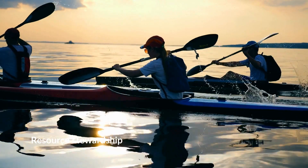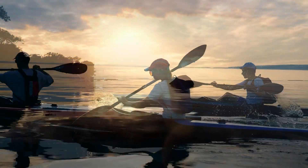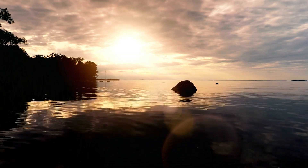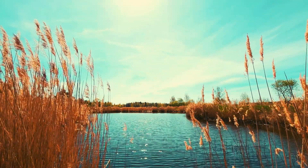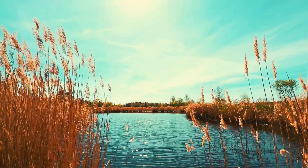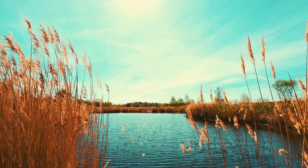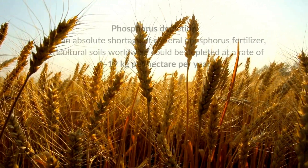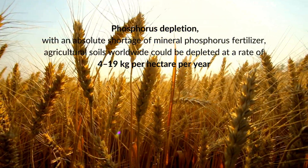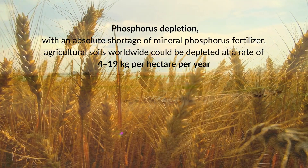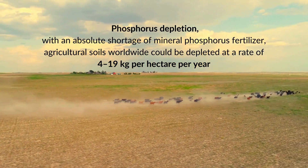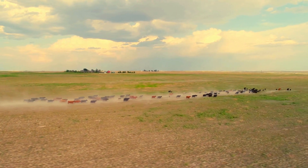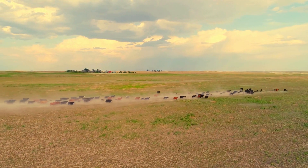In conclusion, achieving an equilibrium between human needs and environmental conservation is imperative in confronting the phosphorus challenge. As the world approaches a critical juncture in phosphorus availability, it becomes increasingly urgent to adopt sustainable practices that prioritize the efficient and responsible utilization of this essential nutrient. This equilibrium is essential for safeguarding our aquatic ecosystems, ensuring the long-term sustainability of our planet, and securing the well-being of all its inhabitants.